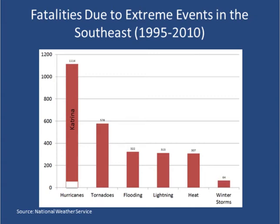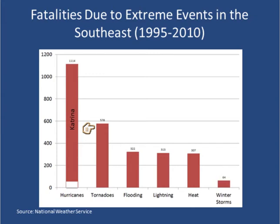If we look at fatalities across the Southeast connected with extreme events, what stands out at first glance is hurricanes, followed by tornadoes, flooding, and so forth. However, the vast majority of hurricane fatalities were actually due to Hurricane Katrina. If you take Katrina away, there are really very few deaths from hurricanes — that has to do with much-improved warnings, coastal evacuations, and so forth. So what really stands out then is tornadoes in the Southeast.